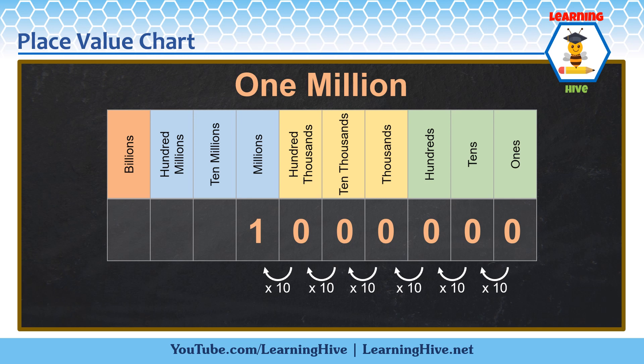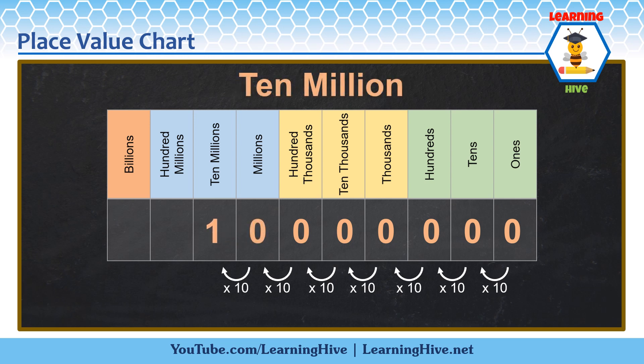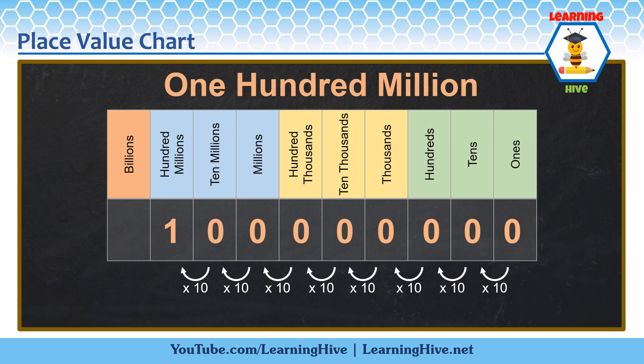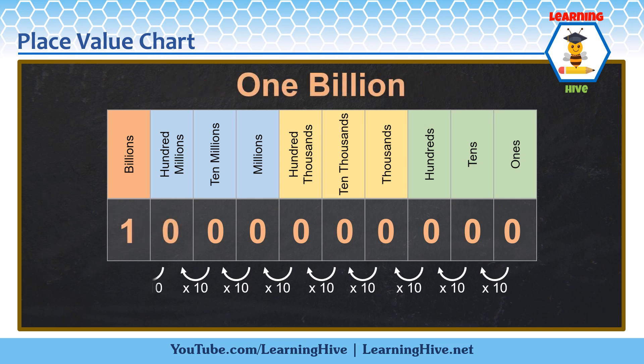Here, 1 has a value of 10,000,000 — 10,000,000 has seven zeros. Here, 1 has a value of 100,000,000 — 100,000,000 has eight zeros. Here, 1 has a value of 1,000,000,000 — there are nine zeros in a billion.